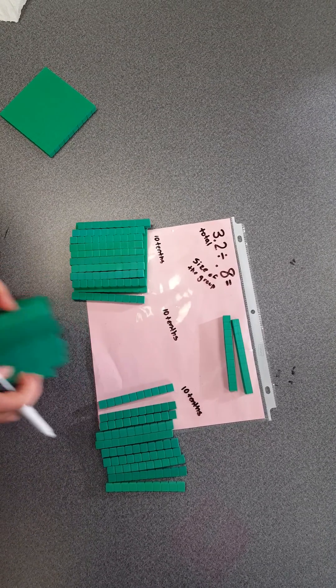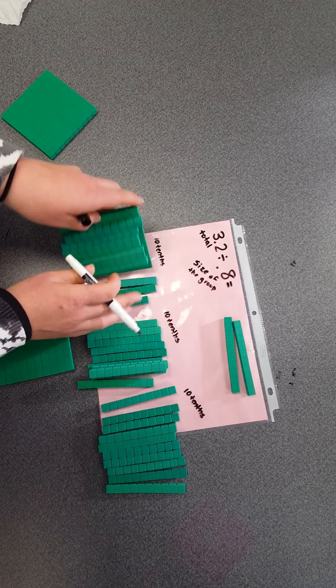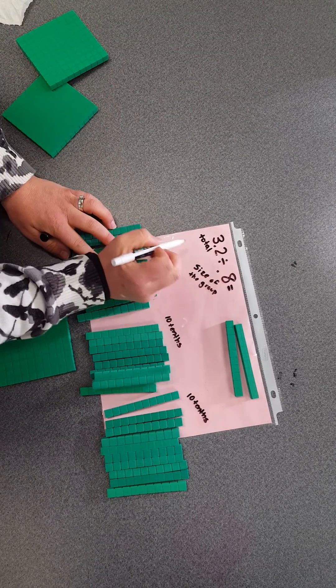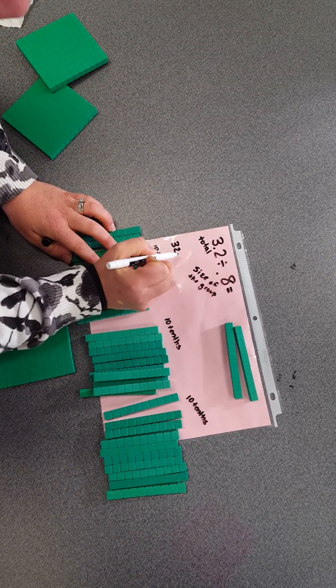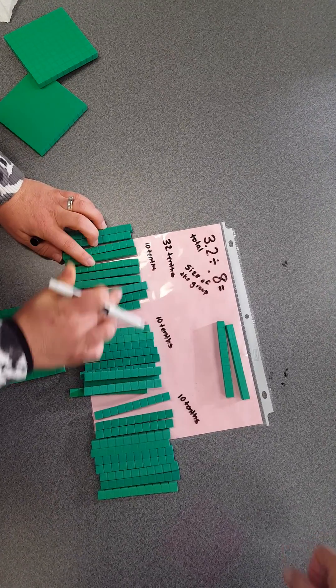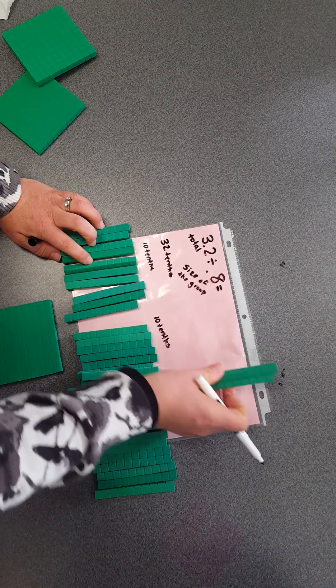Which means that my number, 3.2, is equivalent or can also be called 32 tenths: 10, 20, 30, plus 2.